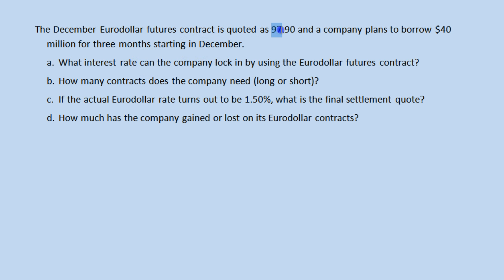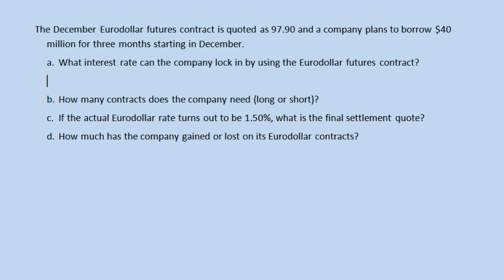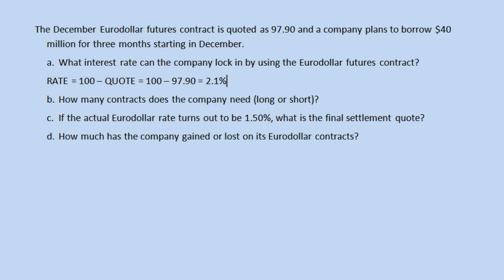First thing we want to know is what this quote means. The question: what interest rate can the company lock in by using this contract? The way these work is that we find the rate by taking 100 and subtracting the quote. In this case, that means 100 minus 97.90, which equals 2.1, expressed as a whole percent — so it is 2.1 percent.